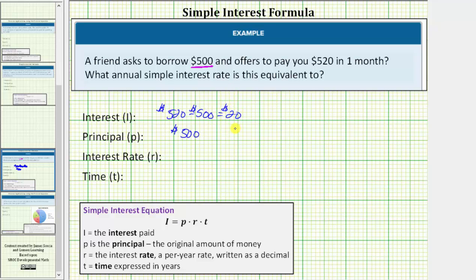He's paying you $20 of interest to borrow the $500, and the time is one month. But the time must be expressed in years, not months. And because there are 12 months in a year, one month is equal to one twelfth of a year. And we're asked to determine the simple interest rate, so the unknown is R, the interest rate.